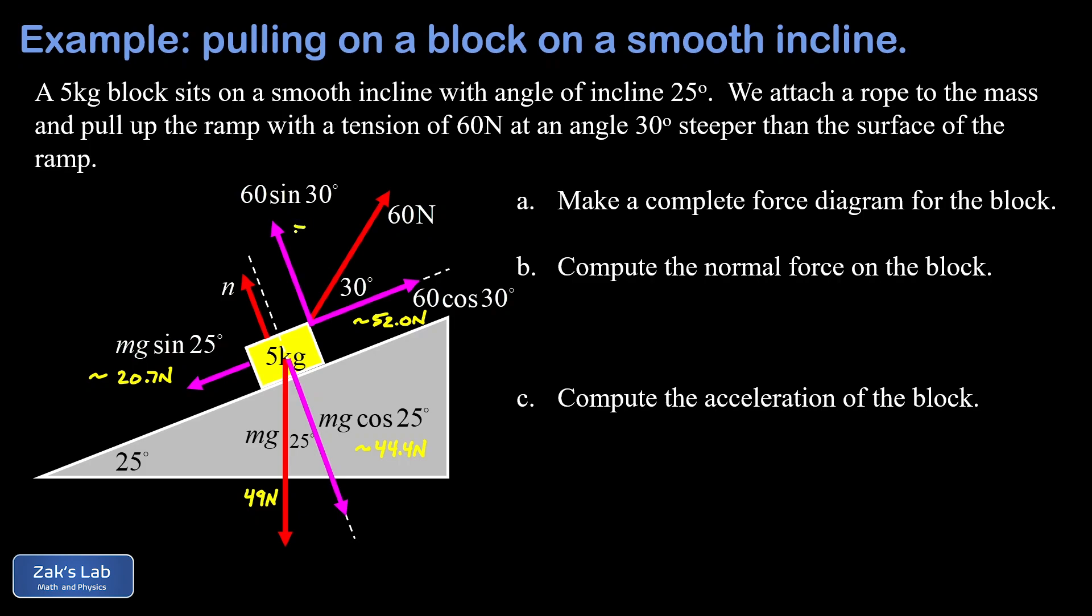Now in part b we want to compute the normal force on the block, and for that we use a perpendicular analysis. So in the perpendicular direction I have zero acceleration because this block is constrained to the surface. And that means all the forces that are pointing up and to the left perpendicular to this ramp must be balanced by all the forces pointing down and to the right perpendicular to the surface.